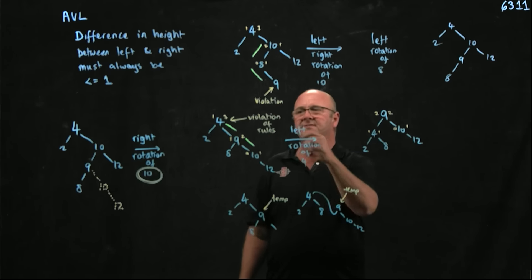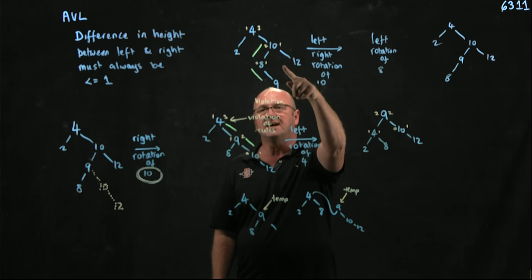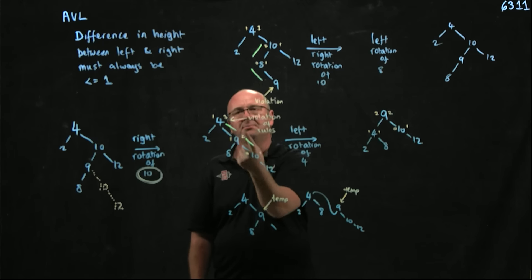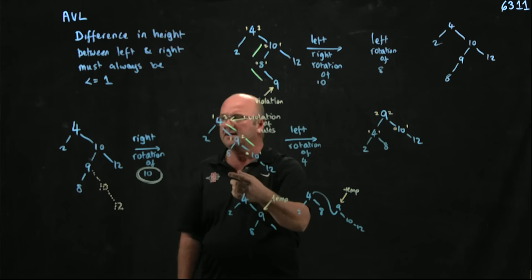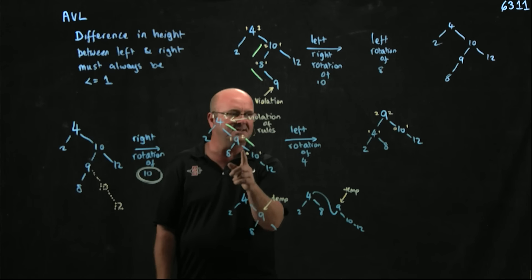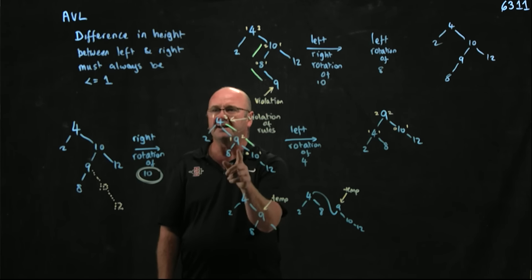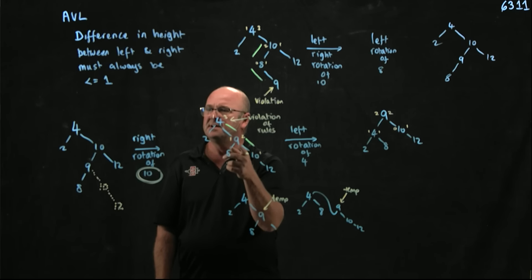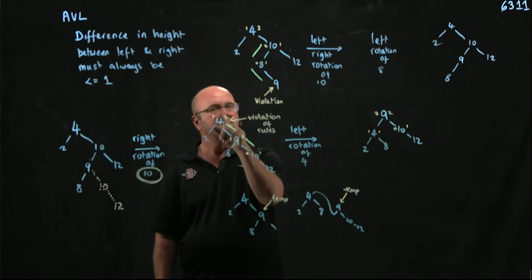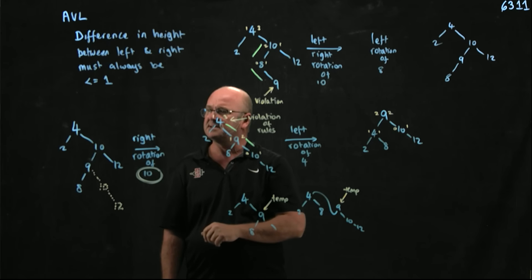Sometimes when you do rotations to fix a problem, like in this case, that creates a new problem further up the tree. As we'll see when looking at trees, whenever we do a rotation to fix the balance, we have to go all the way back to the root and make sure that the rotation we did doesn't introduce a new problem further up the tree that we then need to go and fix.